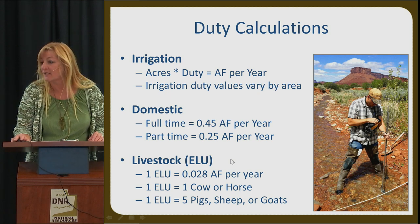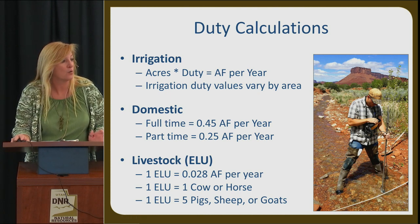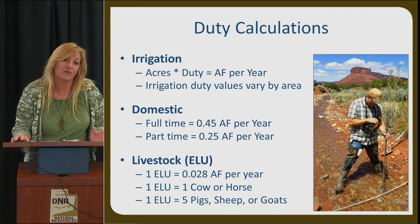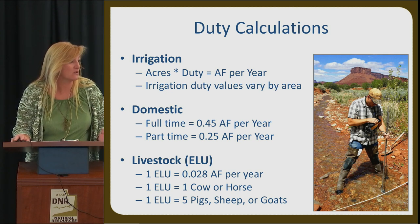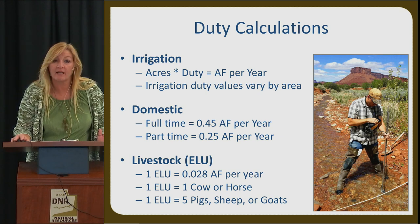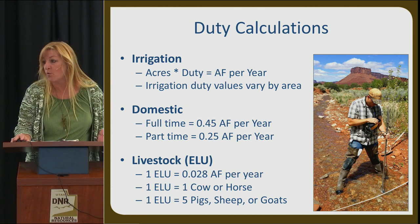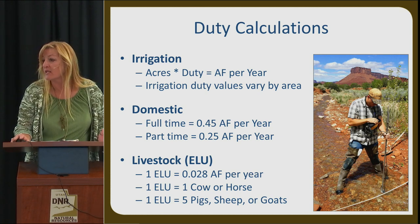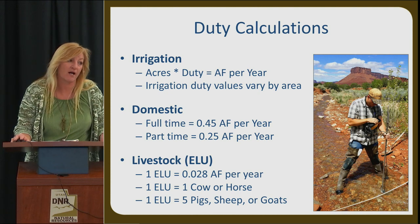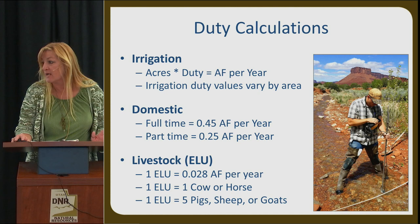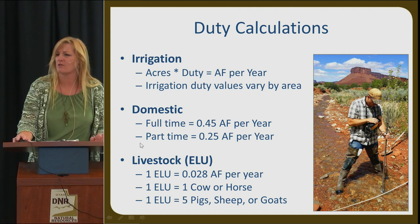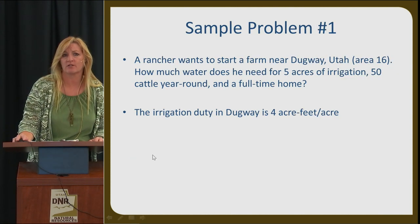For livestock, the equivalent livestock unit is a large animal like a horse or a cow. We prorate by animal size: five medium-sized animals — sheep, goat, or pig — equals one cow. Thirty-three and a third chickens equals one cow. One cow or one horse year-round requires 0.028 acre-feet.